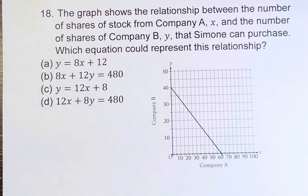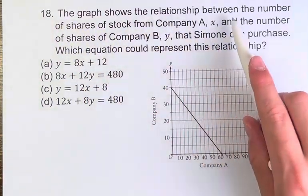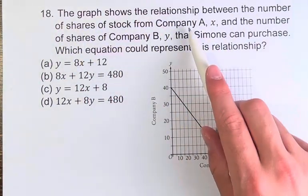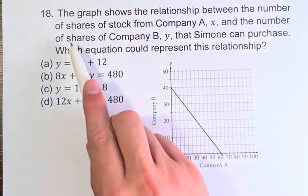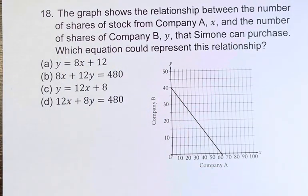Hello and welcome back to another video. In this problem we're told that the graph shows the relationship between the number of shares of stock from Company A, x, and the number of shares of Company B, y, that Simone can purchase. We're asked which equation could represent the relationship.